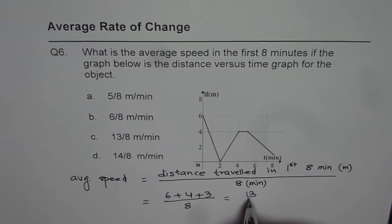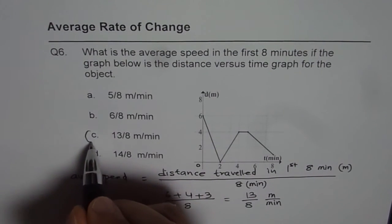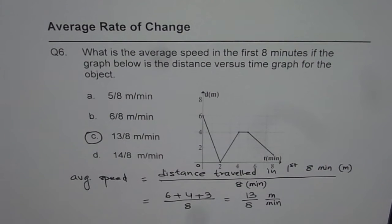Which is thirteen over eight and the units are meters per minute. So that is how you can calculate your answer. So option C is the correct option. I hope that helps. Thank you and all the best.